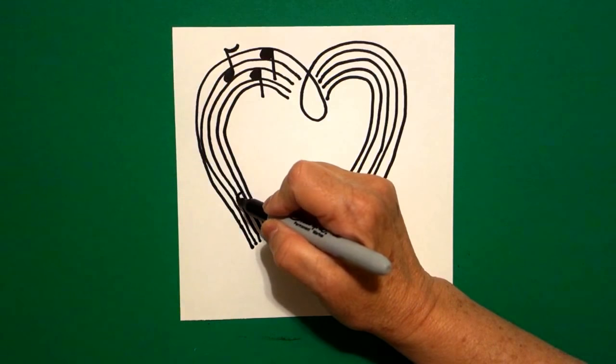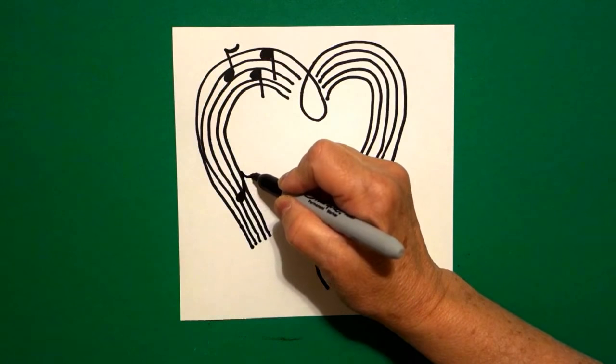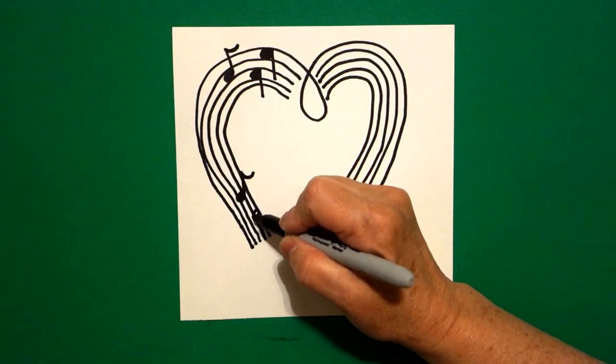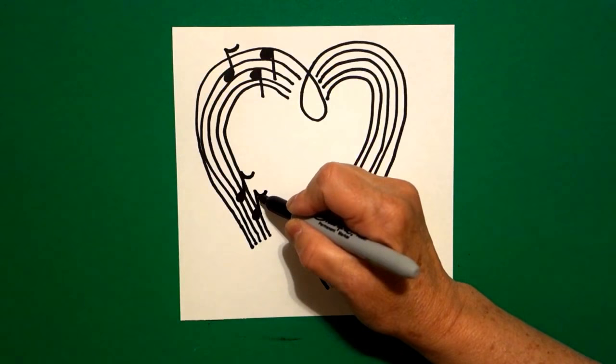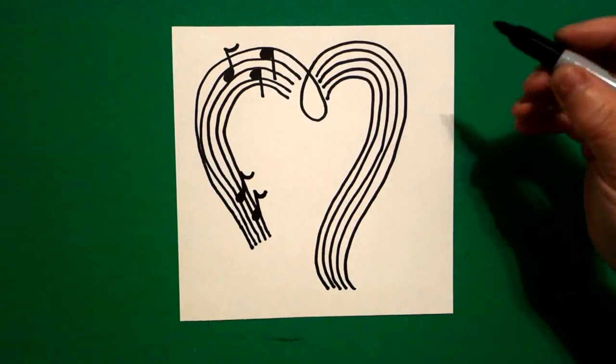Come down over here on the lower left hand side and I'm going to draw an oval, straight line, curve line out, curve line in. Do it again. Oval, straight line, curve line out, curve line in. Connect.